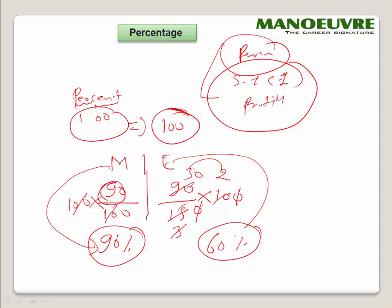Though the marks obtained are the same — 90 in both cases — the base value, which is your total marks, is different in each case. That's why your percentage varies: in English you got 60% and in Maths you got 90%. That is the fundamental concept.